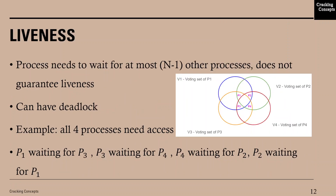Now looking at the liveness property: a process needs to wait for at most n-1 other processes to finish the critical section. However, liveness cannot be guaranteed because there is a chance of deadlock. For example, if all four processes want to access the critical section and P1 is waiting for P2, P2 waiting for P3, P3 waiting for P4, and P4 waiting for P1, there is a circular wait causing no progress — which leads to a deadlock.